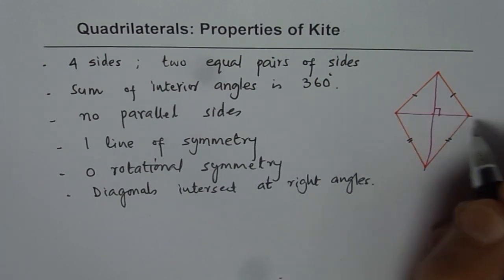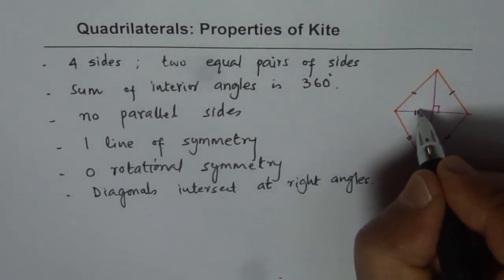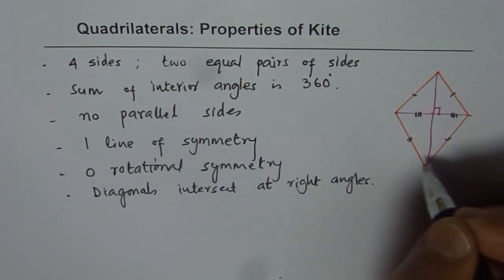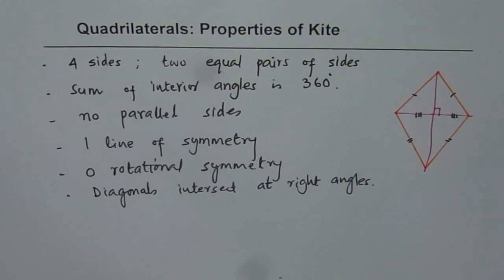So these are very important things which we can consider about a kite. Now, whenever you have this diagonal, then one of them will actually be equal, but the other won't be equal. So that's kind of typical. So with this, I think we've learned properties of a few quadrilaterals.